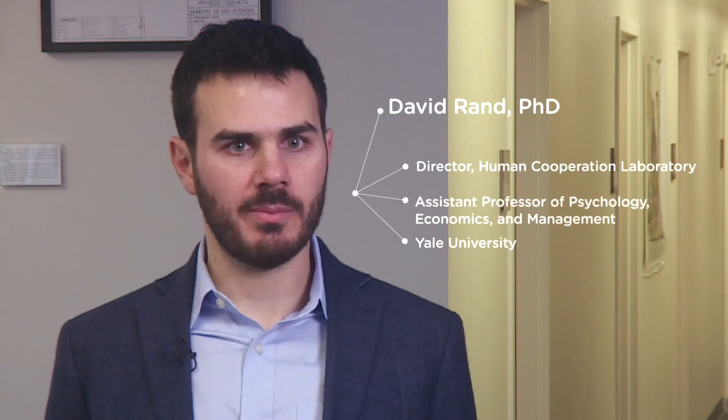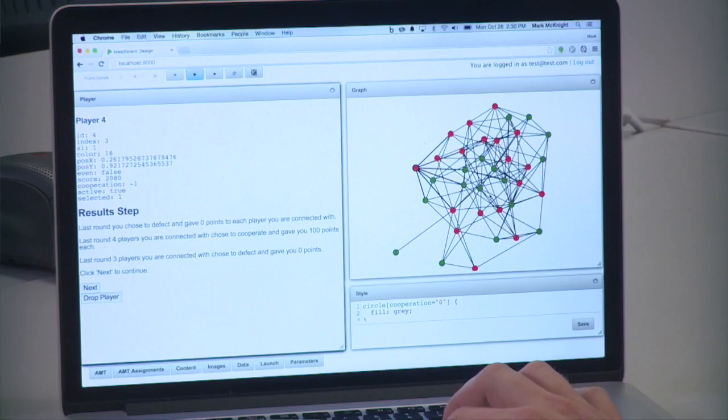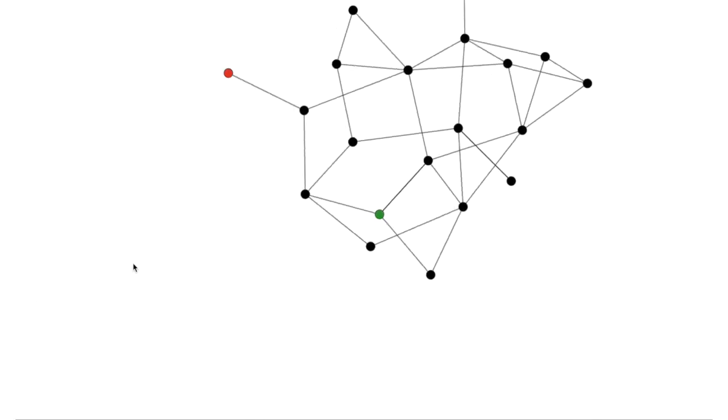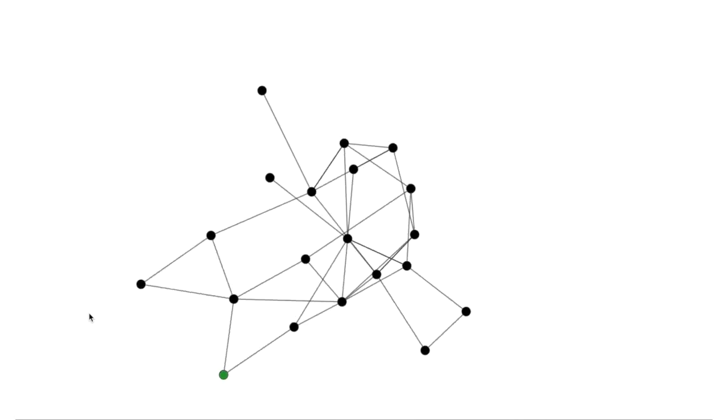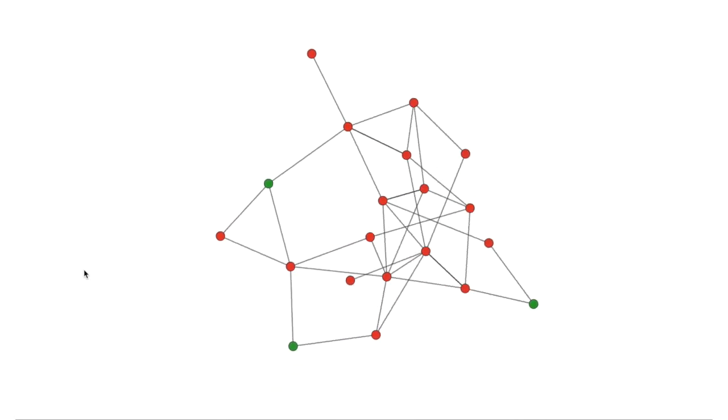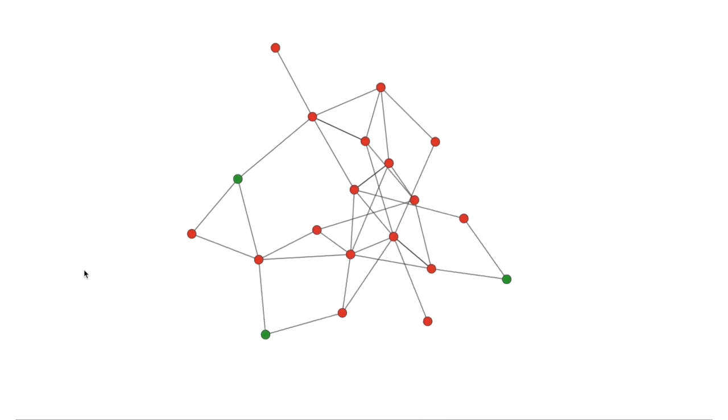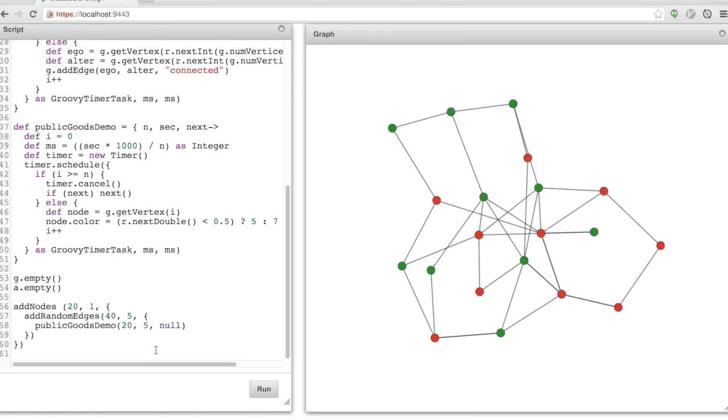I'm Dave Rand. I'm an assistant professor of psychology, economics, and management at Yale, and I run the Human Cooperation Lab. A lot of the work I've been doing using Breadboard is looking at the role of social networks in human cooperation. Using this software, it's possible to prove that you can take a group of people and by arranging them one way make them very cooperative, or take the same people and arrange them a different way and they become uncooperative and mean to each other. Breadboard also makes it easy to change the interaction structure of the experiment.